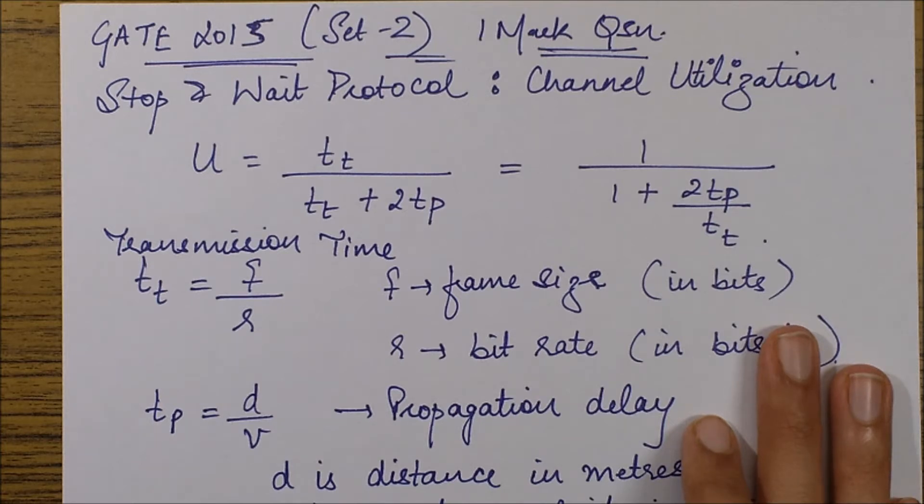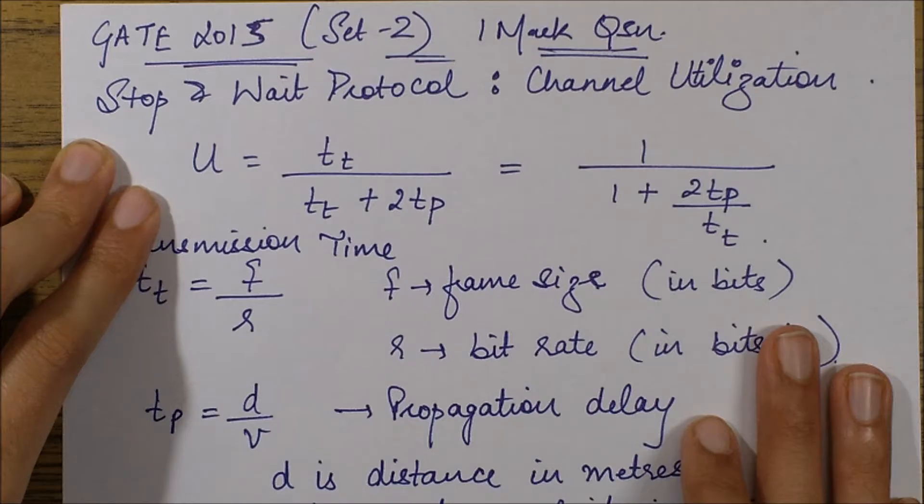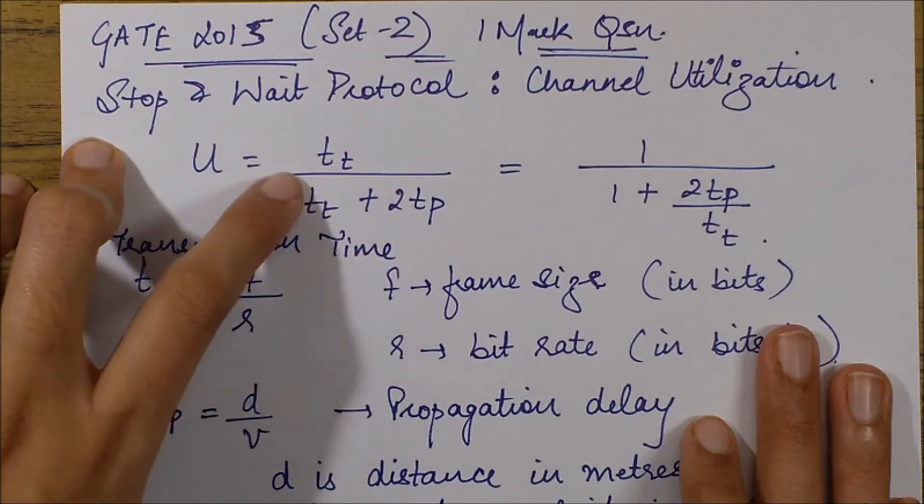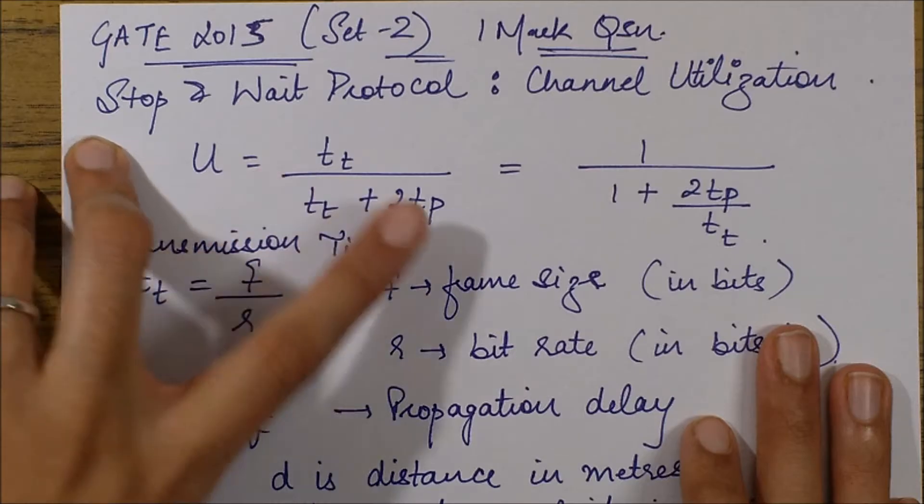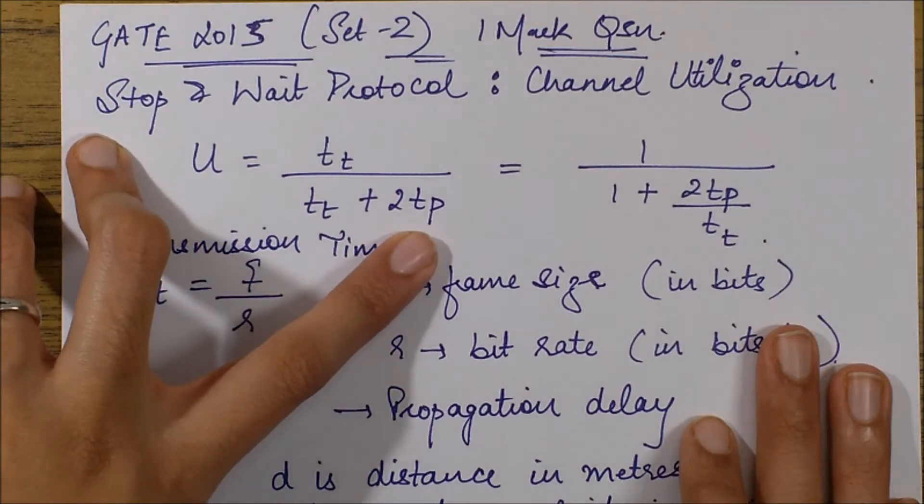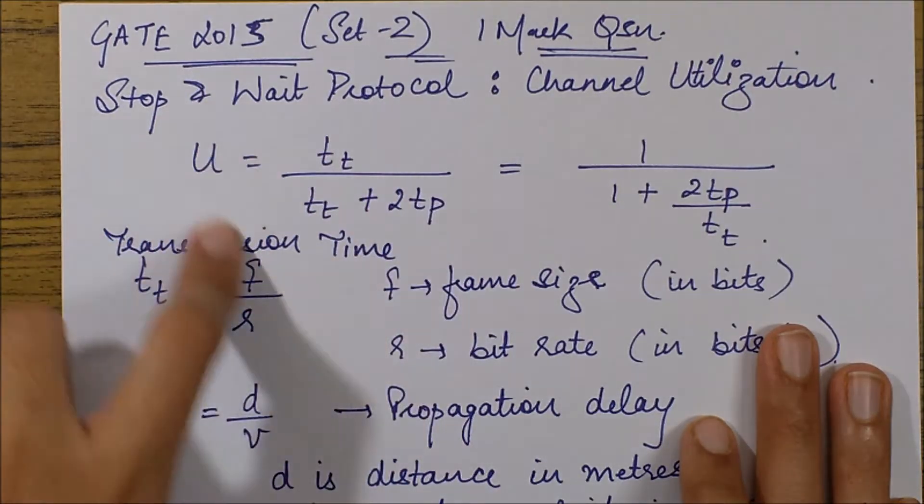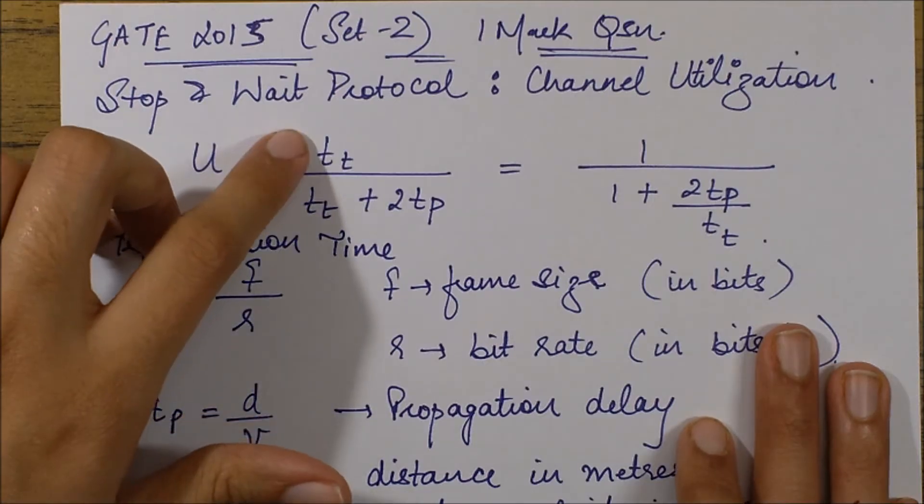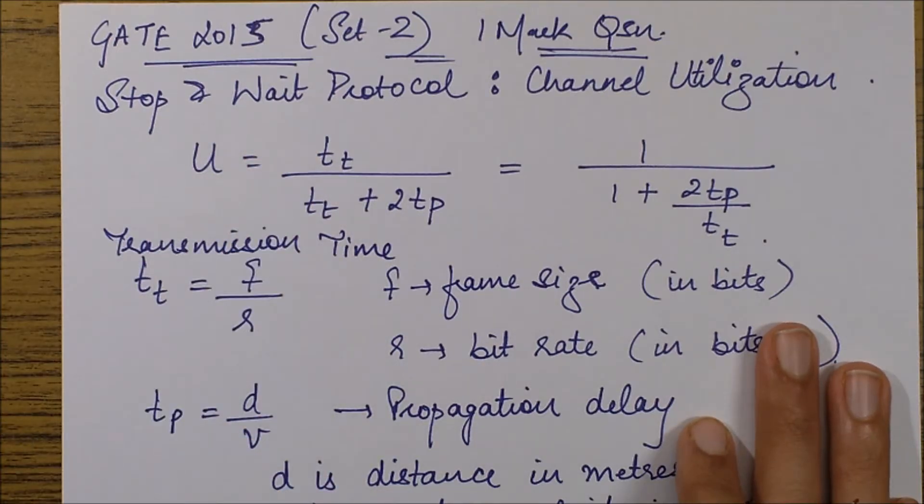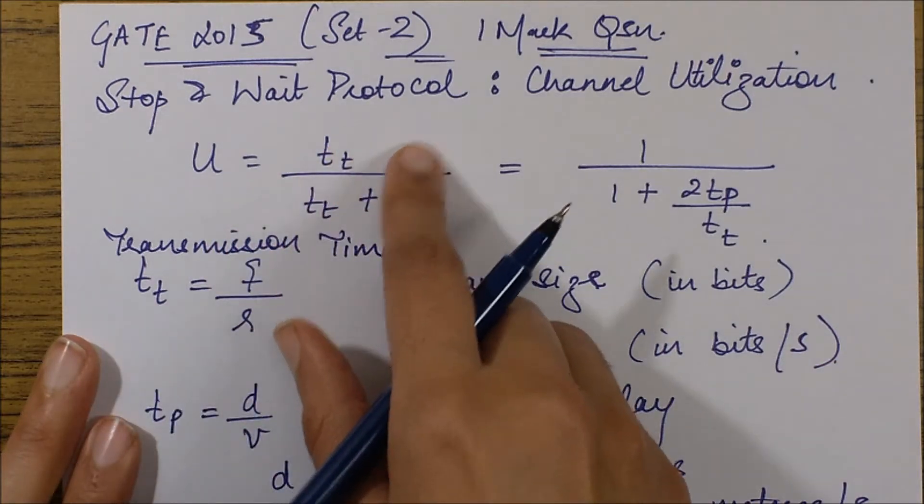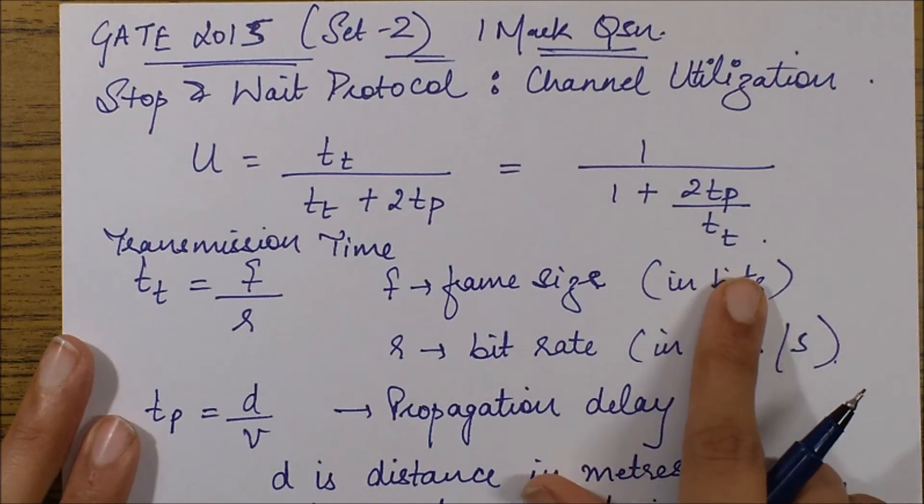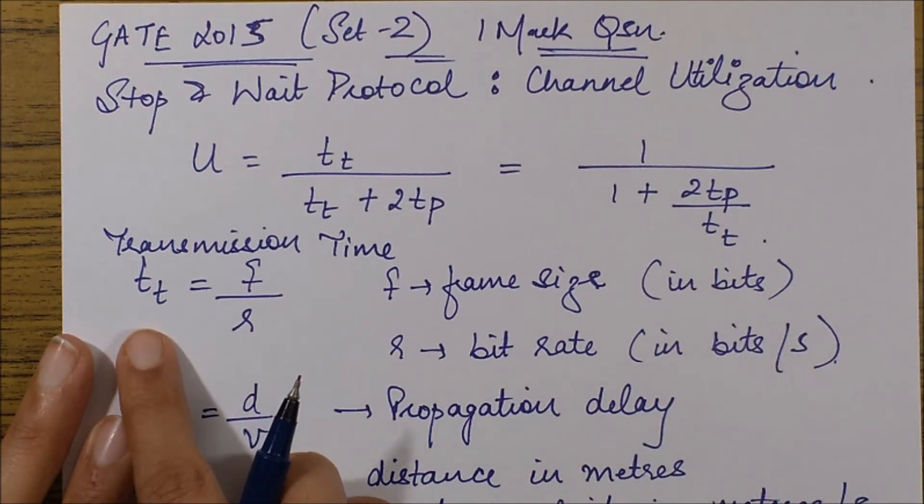Channel utilization for stop and wait protocol is defined as tt by tt plus 2tp, where tt is the transmission time and tp is the propagation delay. This denominator basically signifies the total time of one cycle and tt represents the total active time of the sender. When I divide the numerator and denominator by tt, I get 1 upon 1 plus 2tp upon tt.